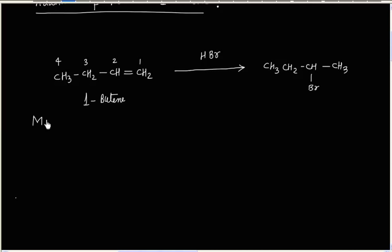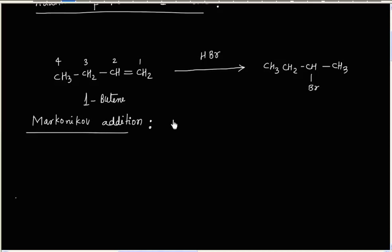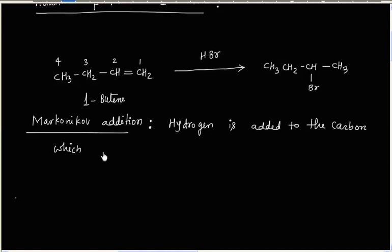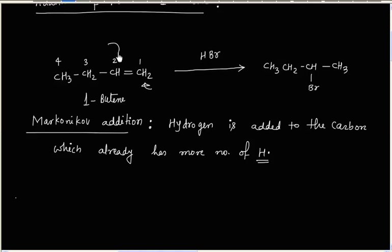This is Markovnikov addition. In Markovnikov addition, hydrogen is added to the carbon which already has more number of hydrogens. In this case, carbon number 1 has 2 hydrogens and carbon number 2 has only 1 hydrogen, so hydrogen will be added to carbon number 1.